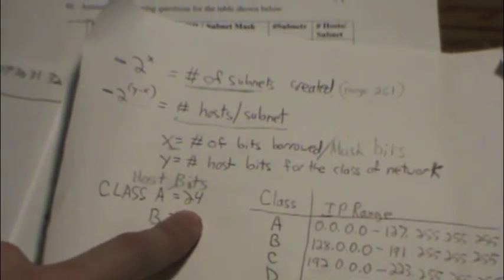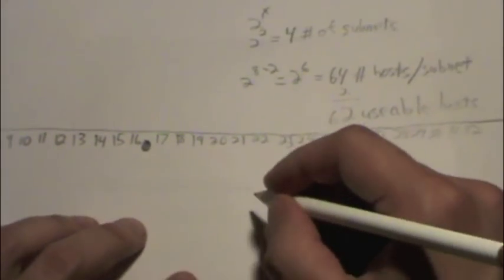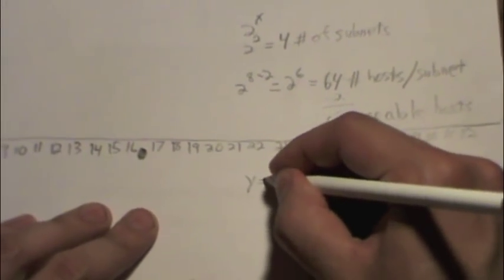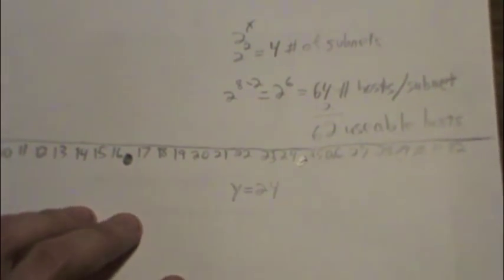So if we go to our little scratch paper here, we know that y equals 24. How do we get the x value? In order to be able to get the x value, the number of bits borrowed, we want to pay attention to what our host bits are.